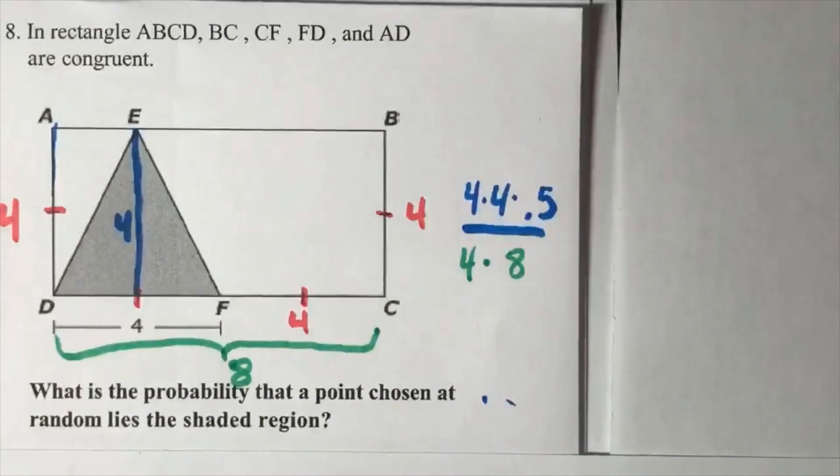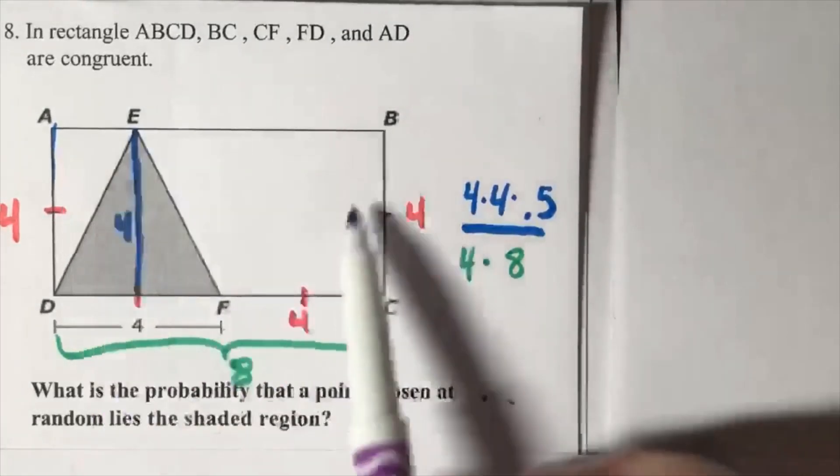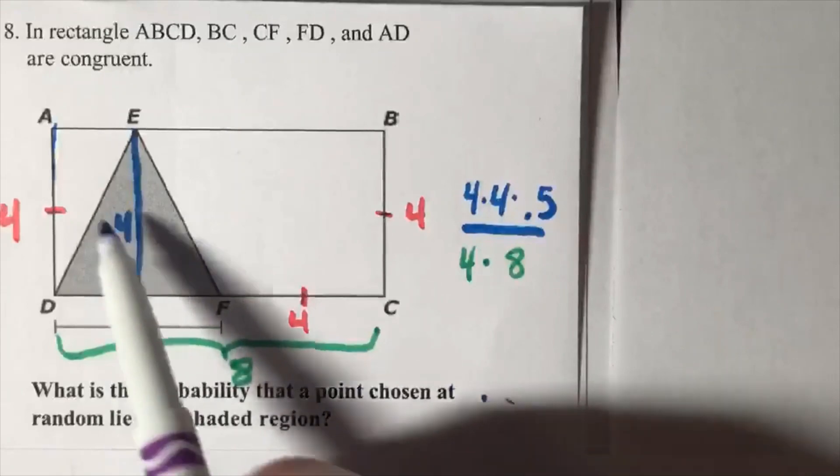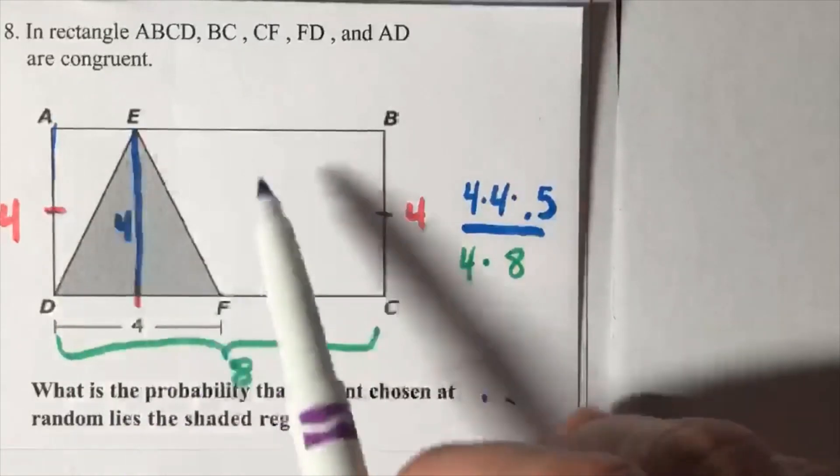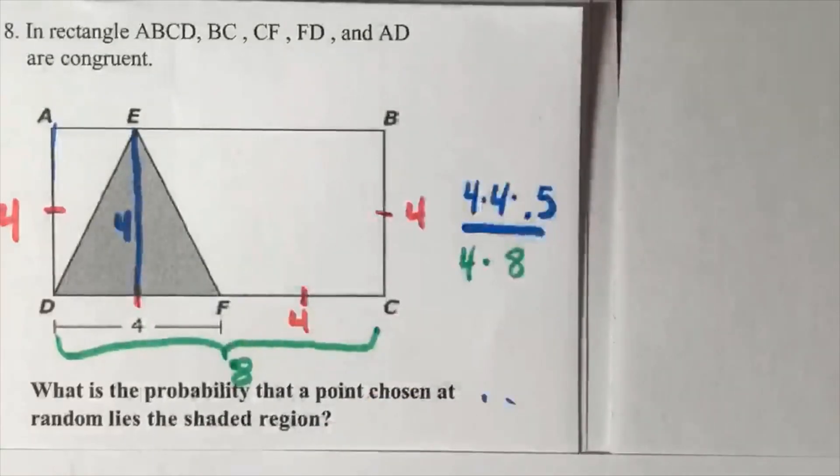That takes care of the shaded area. If we were to figure out the probability of landing in the other areas inside the rectangle, you'd have to take the rectangle and subtract the triangle.